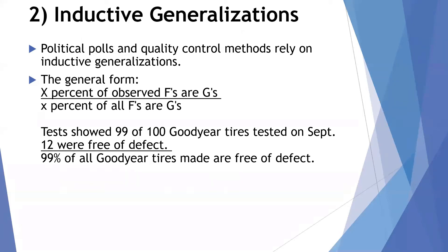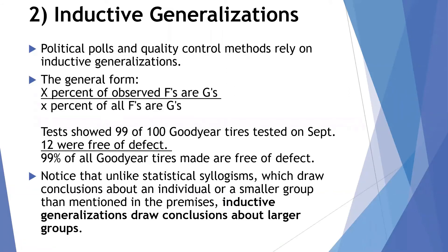A quality control argument might go like this: tests showed that 99 out of 100 Goodyear tires tested on September 12 were free of defect; therefore, 99% of all Goodyear tires made are free of defect. Notice that unlike statistical syllogisms, which draw conclusions about an individual or smaller group, an inductive generalization draws conclusions about larger groups — going from merely 100 Goodyear tires to a statement about all Goodyear tires, which are surely in the hundreds of thousands or millions.